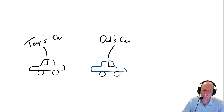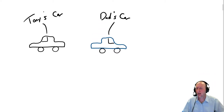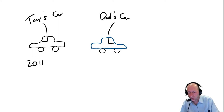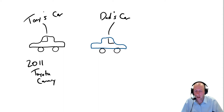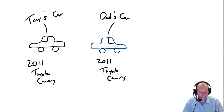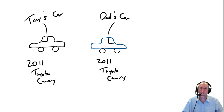It's about a car. A couple years ago, I bought a car — a 2011 Toyota Camry. And at the exact same time, my dad bought a used car as well. And he bought, believe it or not, a 2011 Toyota Camry. It was surprising, because we bought them separately without having talked to each other, and we basically bought the same car.